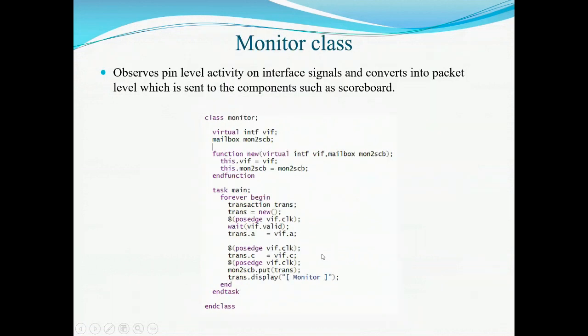Next is the monitor class. The monitor observes pin level activity on interface signals and converts them into packet level data, which is sent to components such as the scoreboard. It observes the communication of the DUT with the testbench and returns an error if the protocol rules are not met. It also observes the input of the DUT for functional coverage analysis. A mailbox named monitor-to-scoreboard is declared here, lying between the monitor and the scoreboard. The values generated by the monitor are put into this mailbox so the scoreboard can access them. A for loop represents all transactions between the monitor and the mailbox.